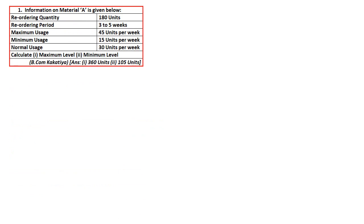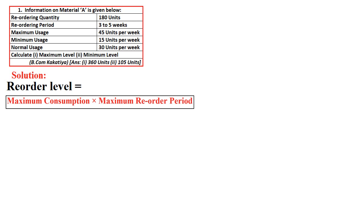We will take up the first question. The following information is given for material A: reorder quantity 180 units; reorder period 3 to 5 weeks (minimum 3, maximum 5, average 4 weeks); maximum usage 45 units, minimum usage 15 units, normal usage 30 units. We are required to calculate minimum and maximum levels. To calculate these, we first need to calculate the reorder level. The formula is maximum consumption multiplied by maximum reorder period: 45 units × 5 weeks = 225 units is the reorder level.